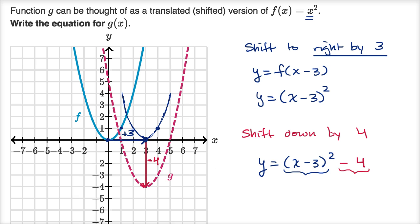So this right over here is the equation for g(x). g(x) is going to be equal to (x - 3)² - 4.